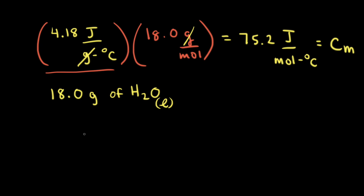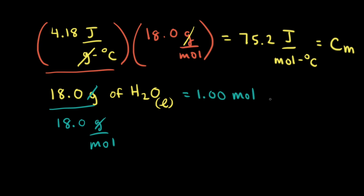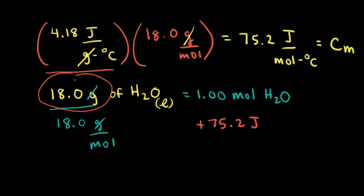If we have 18.0 grams of water and divide by the molar mass of water, which is 18.0 grams per mole, the grams cancel and we get 1 mole of liquid H₂O. Using the molar heat capacity, it would take positive 75.2 joules of energy to increase the temperature of that 18.0 grams of water by 1 degree Celsius.